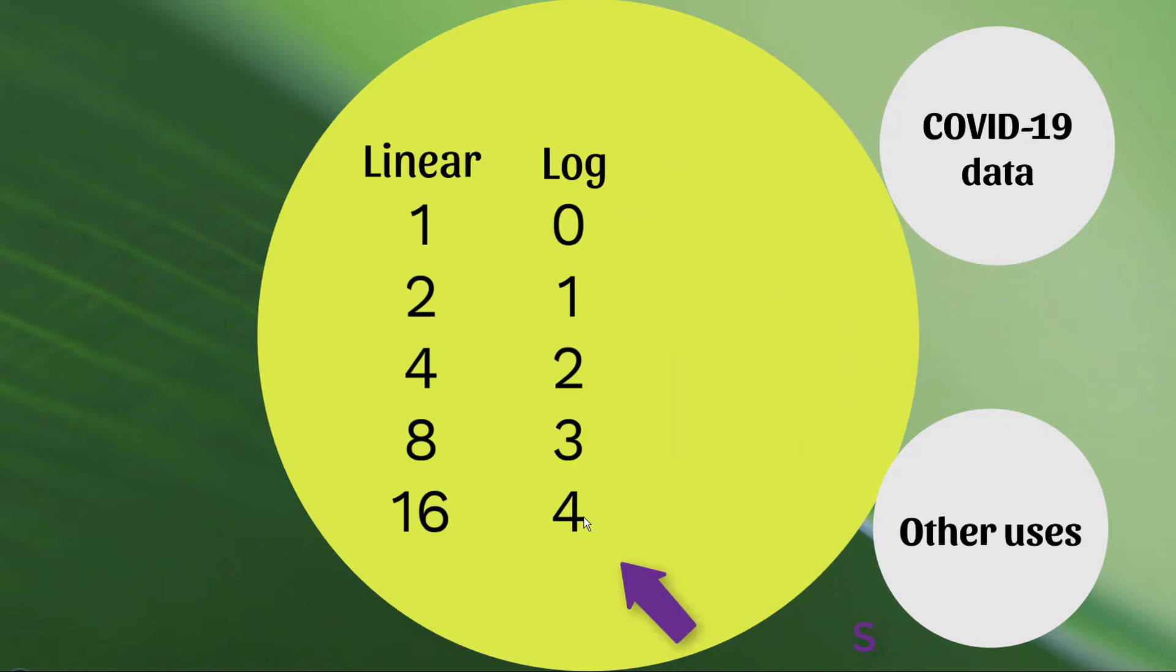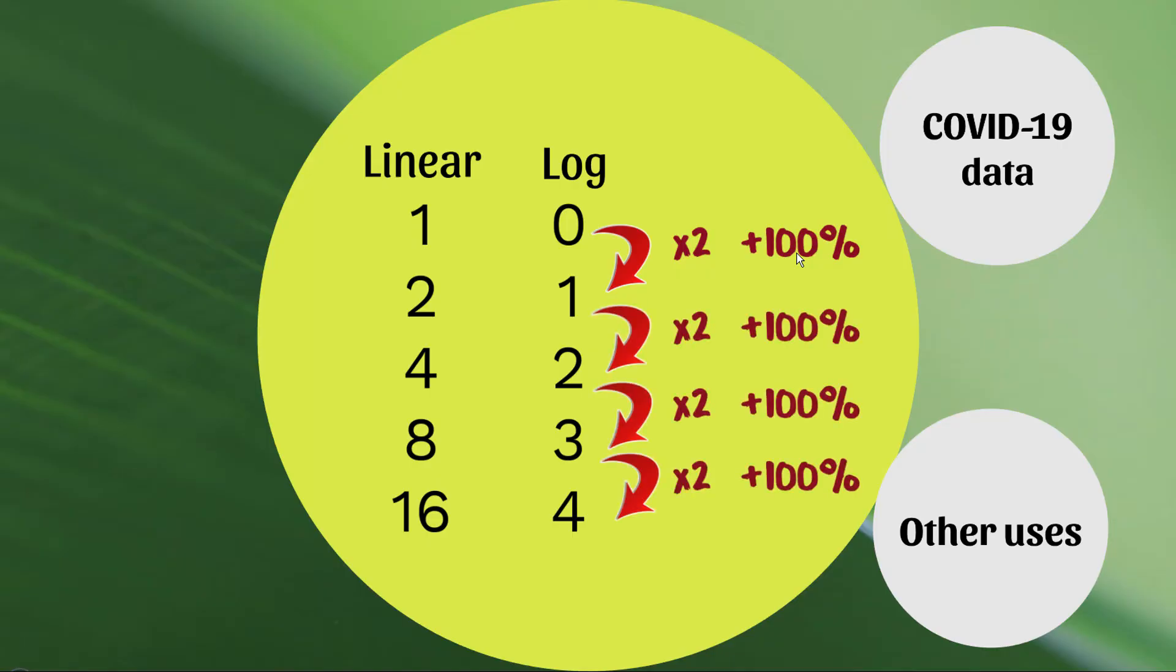But the beauty of this log scale is that each consecutive increase we do now represents, yes, a doubling, but it also represents a consistent proportionate increase. Because a doubling just represents an increase of 100%, right? So if we go from zero to one, that's an increase of 100%. If we go from one to two, again, that's an increase of 100%. Two to three, the same. Because they're counting doublings.